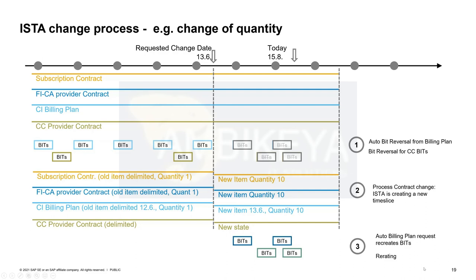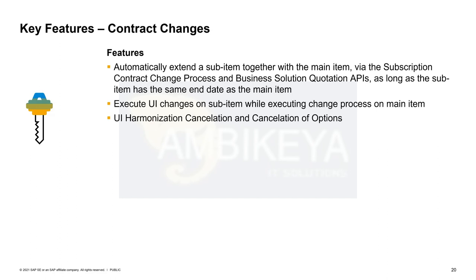The last point for contract lifecycle management is general contract changes. The most important improvement is automatic extension of sub-items: previously you had to extend the main item and separately extend the sub-item. Now, if the sub-item has the same end date and you run an extension or auto-extension change process on the main item, the sub-item is also automatically extended so it is not left behind.